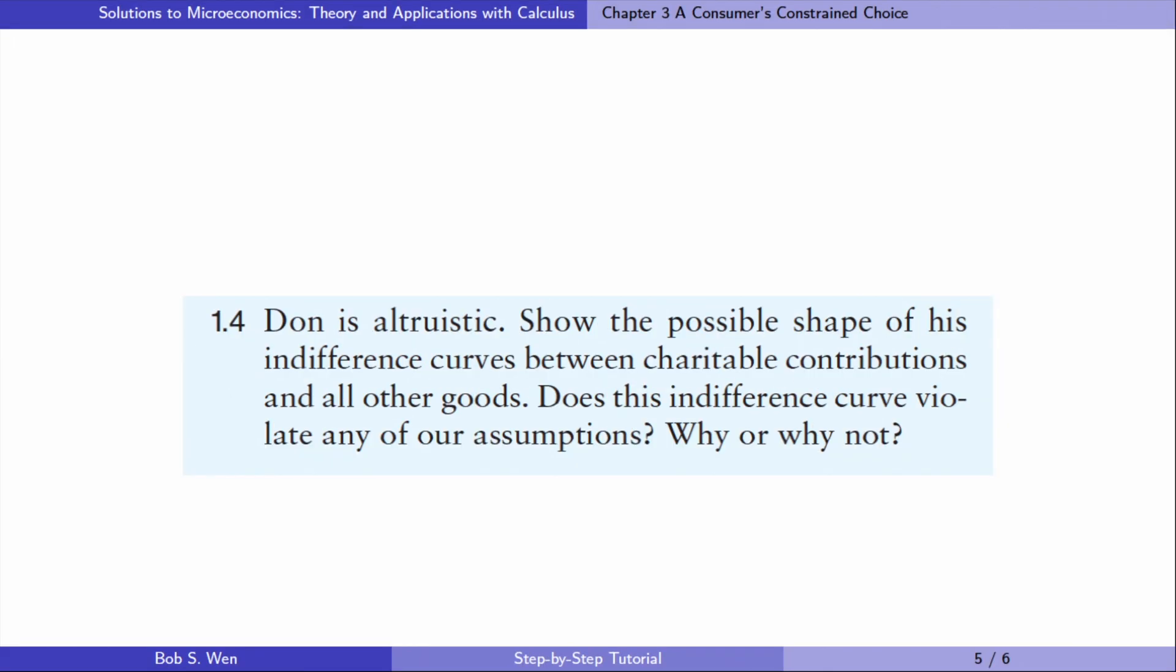Let's solve exercise 1.4. Don is altruistic, show the possible shape of his indifference curves between charitable contributions and all other goods. Does this indifference curve violate any of our assumptions? Why or why not?